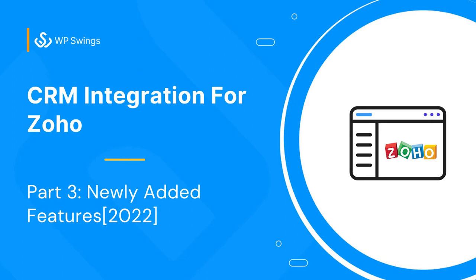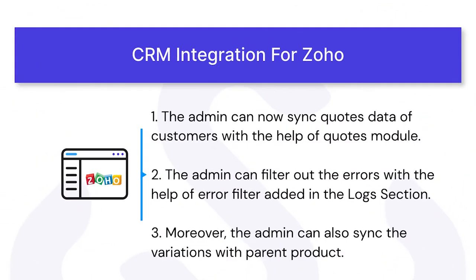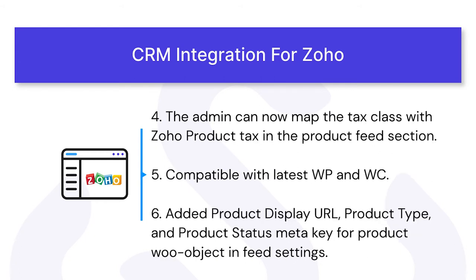Before moving to the plugin's backend settings, let's first see what are the newly added features. With CRM Integration for Zoho plugin, the admin can sync the quotes data with the help of the quotes module in the product feed edit section. We have also added a filter to filter out errors in the log section, and a new option to sync the parent product with variations.